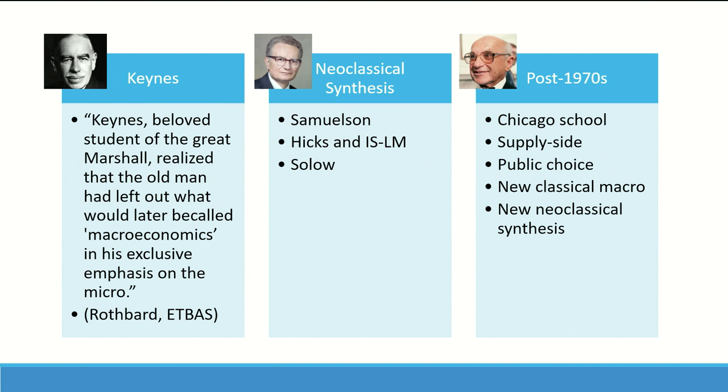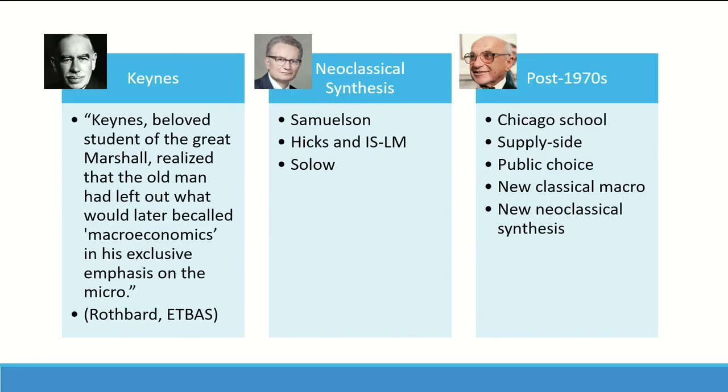Keynes was not strictly neoclassical, although he credited Marshall and Pigou as mentors and tried to fill in gaps Marshall left by answering macroeconomic questions. As Rothbard notes, Keynes — a beloved student of the great Marshall — realized that Marshall had left out what would later be called macroeconomics in his exclusive emphasis on the micro. This was revolutionary. Economists after Keynes tried to make sense of the General Theory and came up with formal mathematical models. Some tried to reconcile Keynesian insights with neoclassical micro — this was called the neoclassical synthesis — primarily formalized by Samuelson and Hicks, with the IS-LM model, and growth models by Robert Solow.